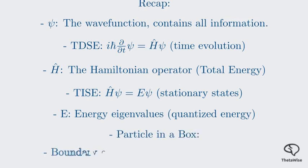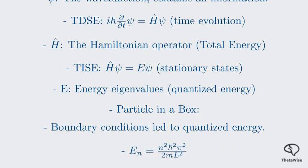We applied the TISE to the particle in a box, and by using boundary conditions, we derived the formula for the quantized energy levels. This showed us that the particle can only exist in discrete energy states. We have successfully distinguished between the time-dependent and time-independent forms of the Schrödinger equation, defined the wave function and Hamiltonian, and solved a key quantum mechanical problem. You're now well on your way to exploring the quantum world.